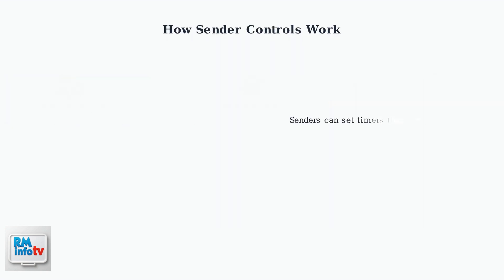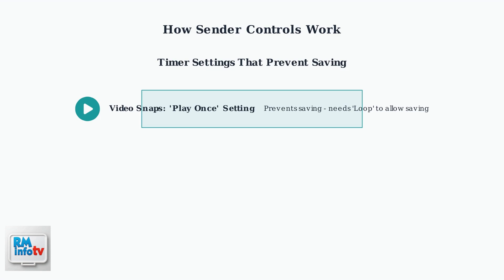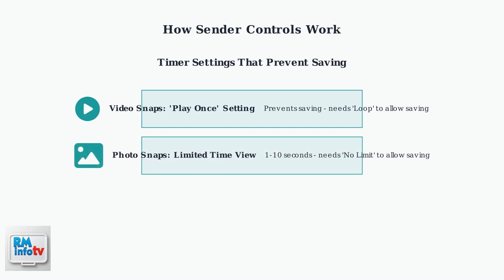The most common reason for saving issues is sender controls. When someone sends you a snap, they can set timers that determine how long the content is viewable and whether it can be saved. For video snaps, if the sender sets it to play once, you cannot save it — the sender needs to change the setting to Loop to allow saving. For photo snaps, if there's a time limit of 1 to 10 seconds, saving is blocked; the sender must set it to no limit for you to save the photo.